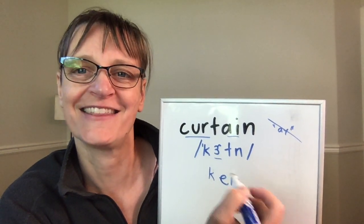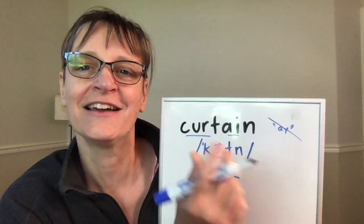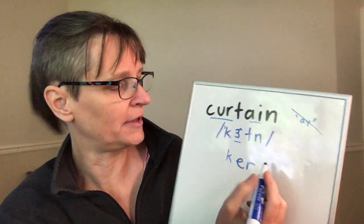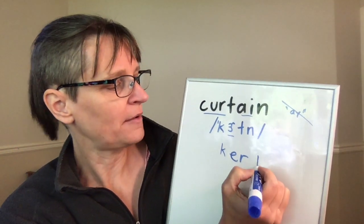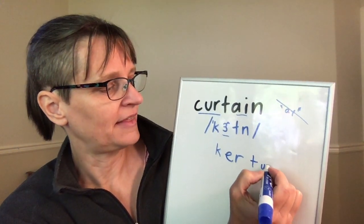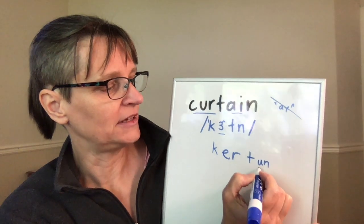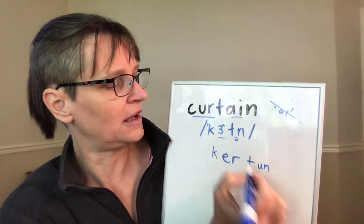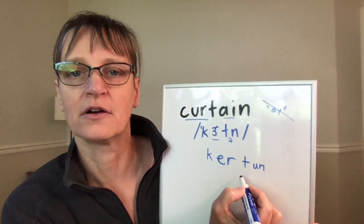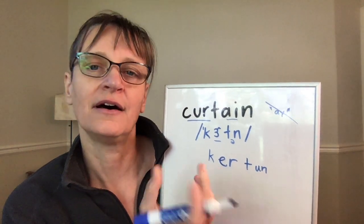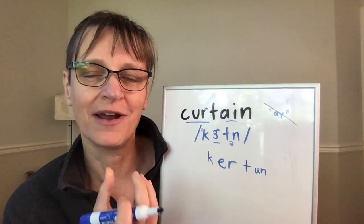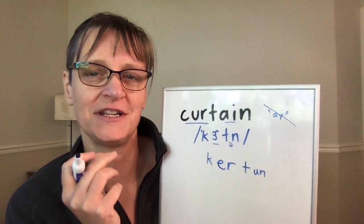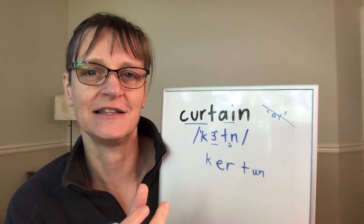A syllabic N basically means that the N consonant sound functions as the full syllable. If I were to write it, I would put maybe a little tiny schwa — a little 'uh' sound — in there. Curtain. Curtain. When I say it, I'm really going from the stopped T directly into the N.